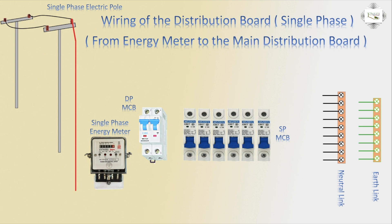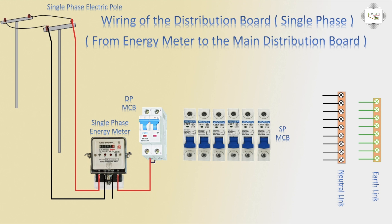From the electric pole to the energy meter: phase connection and neutral connection from the energy meter, then outgoing to DP circuit breaker — phase input and neutral input to the HDB.